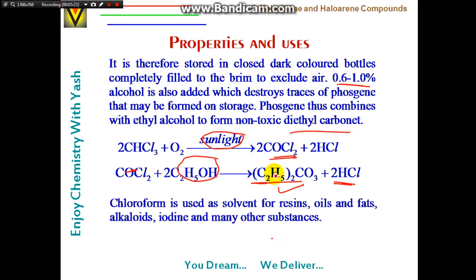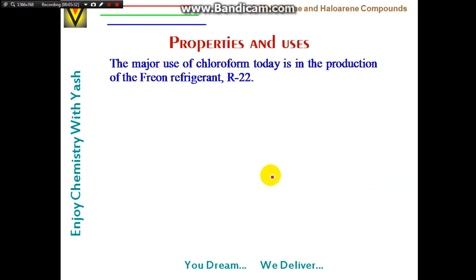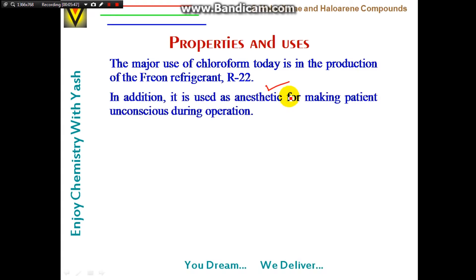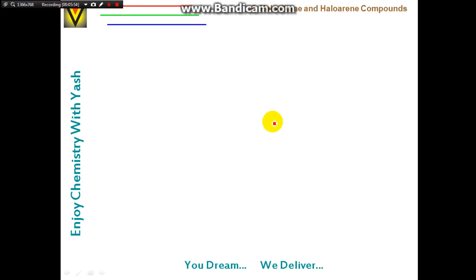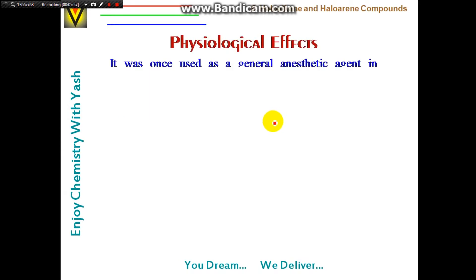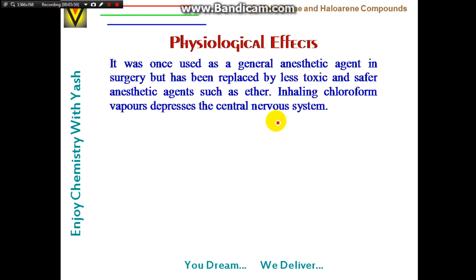Chloroform is used as a solvent for resins, oils, fats, alkaloids, iodine, and many other substances. Its major use today is in the production of Freon refrigerant R-22. It is also used as an anesthetic to make patients unconscious during surgery.